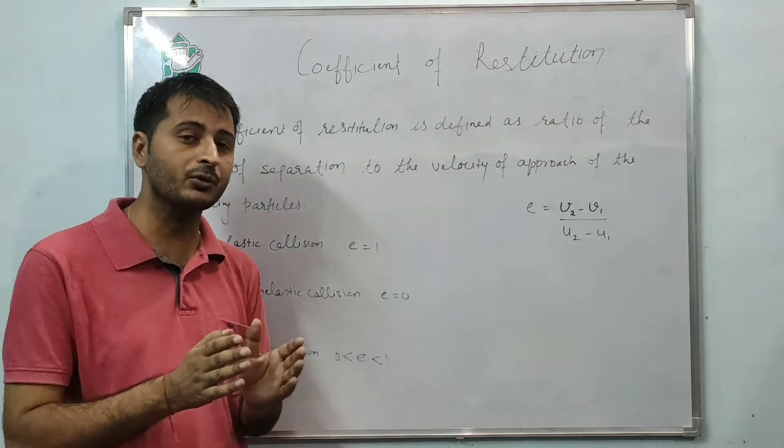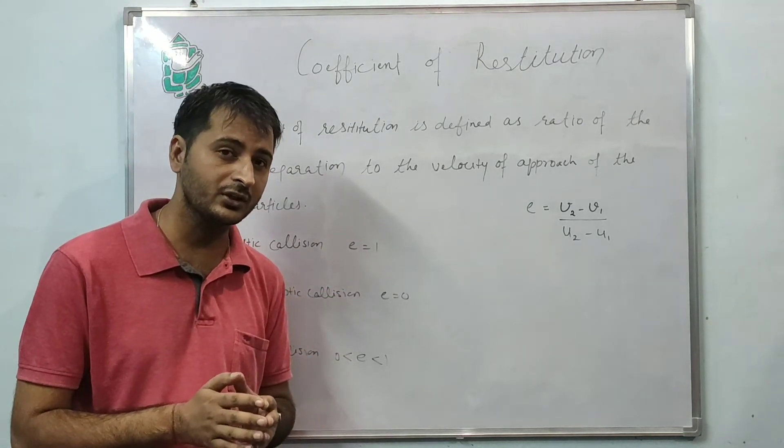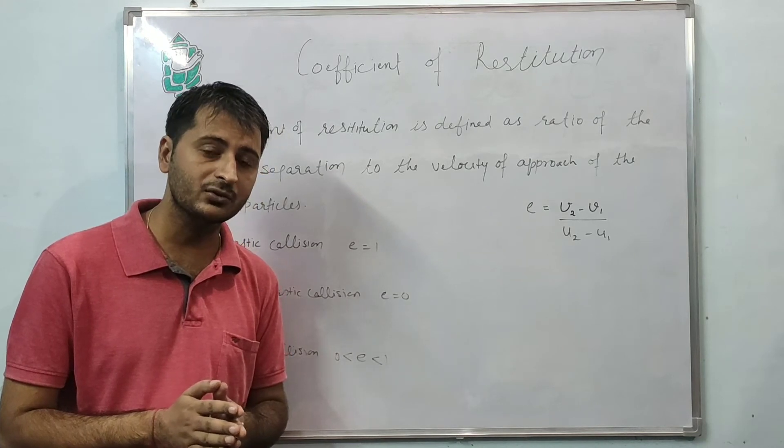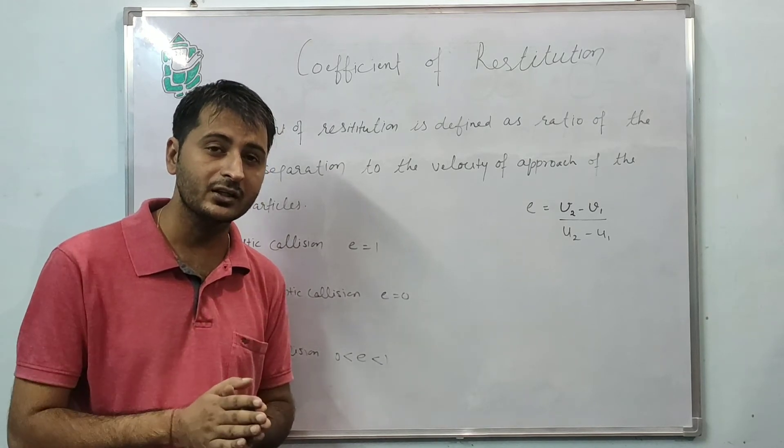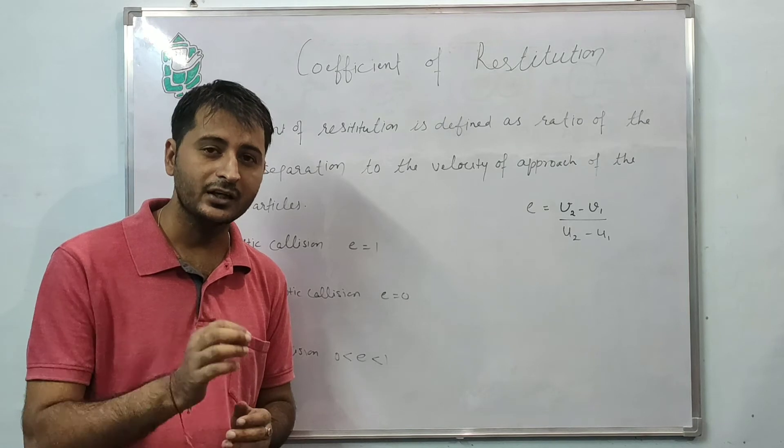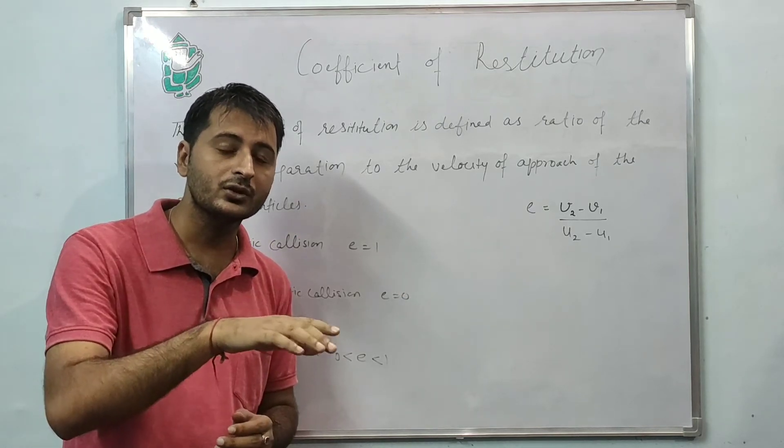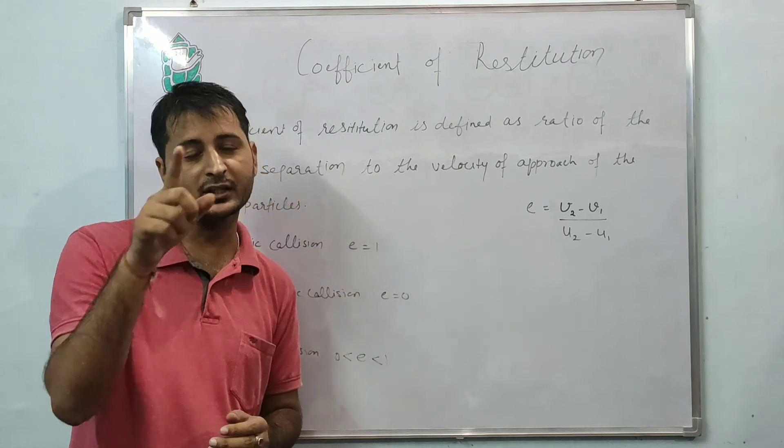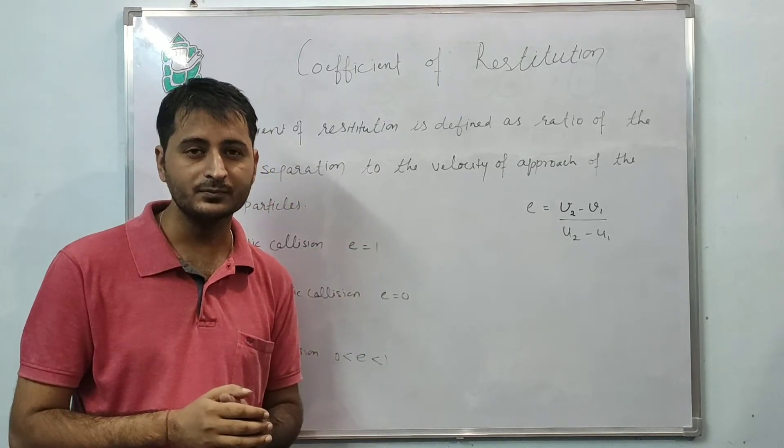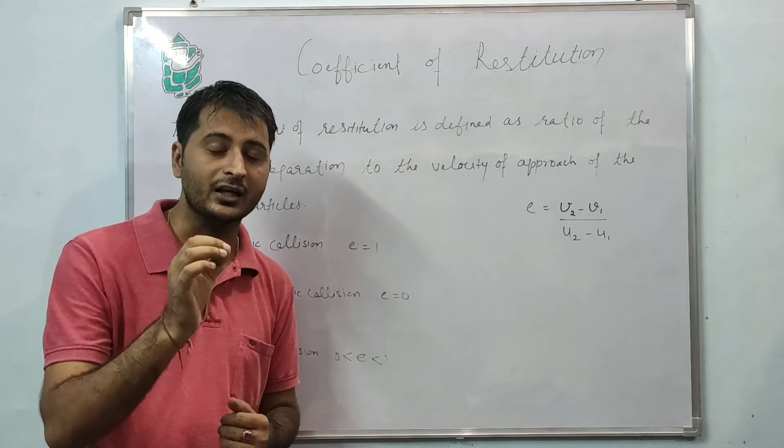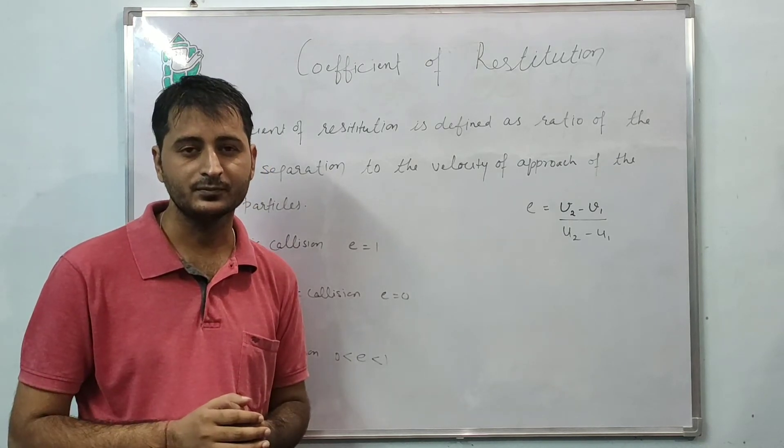From the derivation, it means that u2 minus u1 equals v2 minus v1. What do we define? Relative velocity of approach before collision equals relative velocity of separation after collision. So this is the case of e equals one.